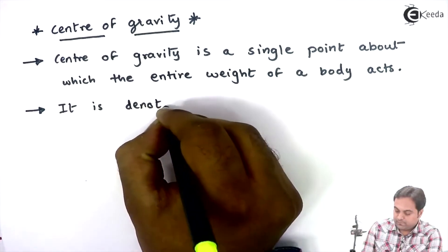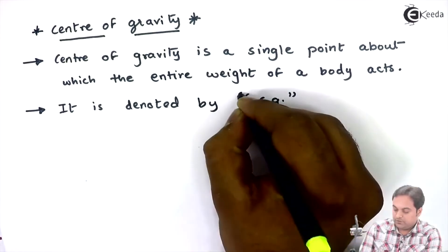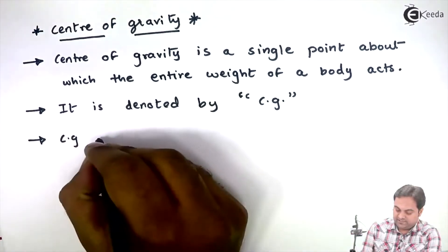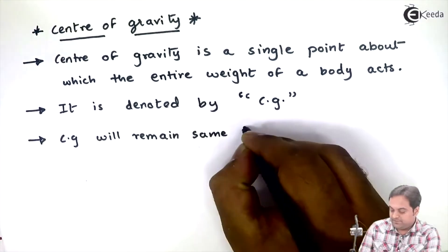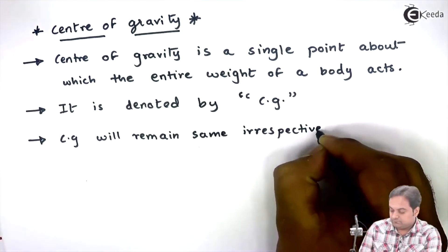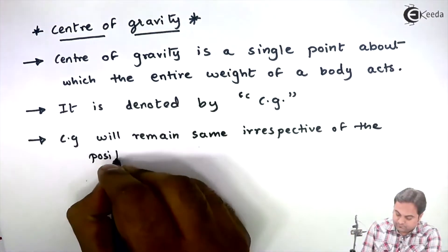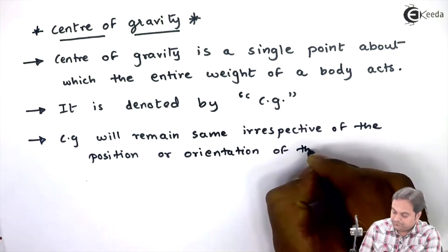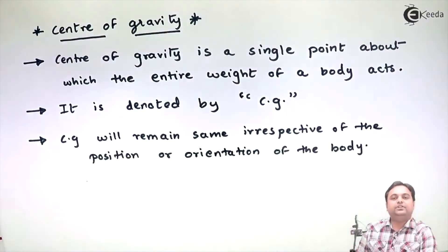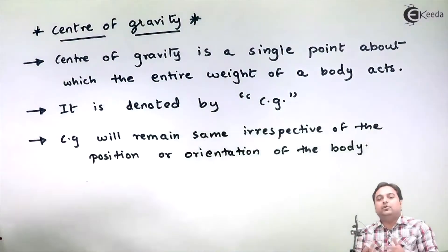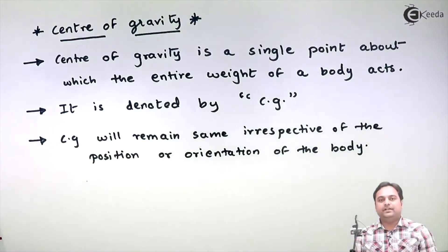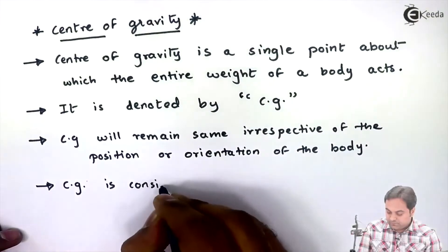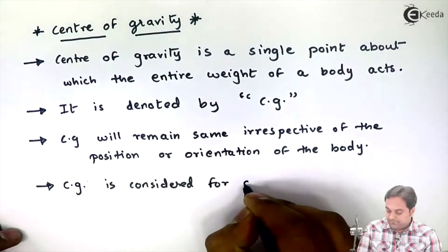Center of gravity is denoted by CG. CG will remain the same irrespective of the position or orientation of the body. That point will not change — even if we turn the body or change its position, the center of gravity will remain the same.